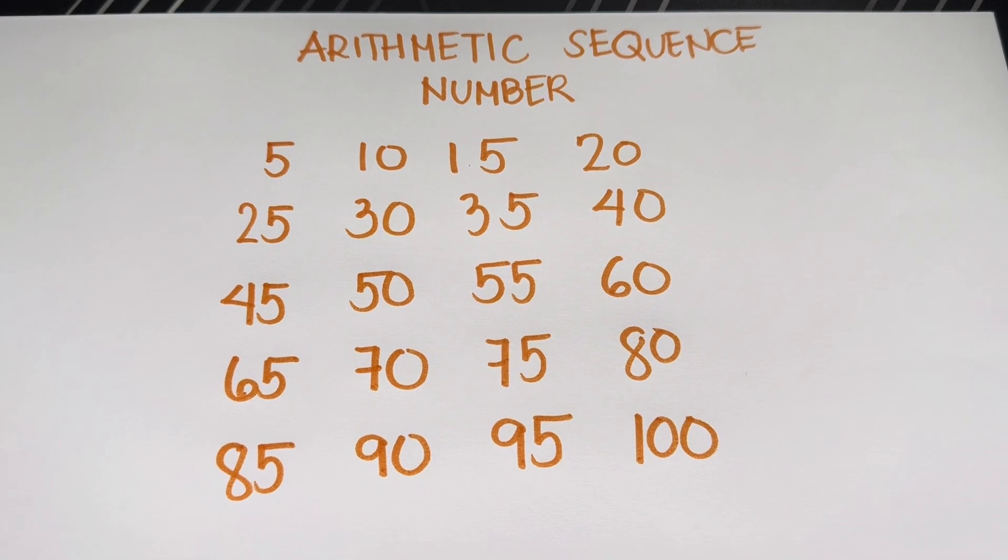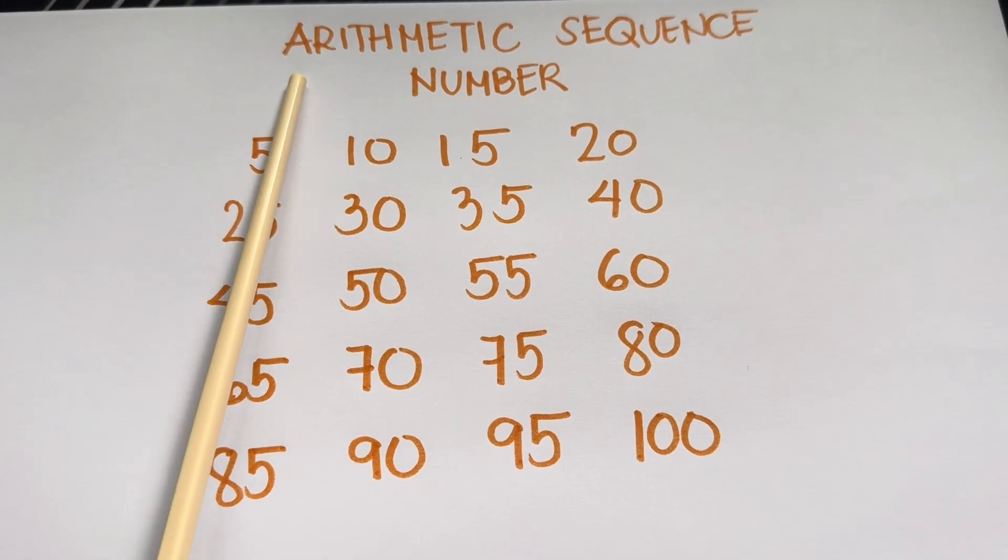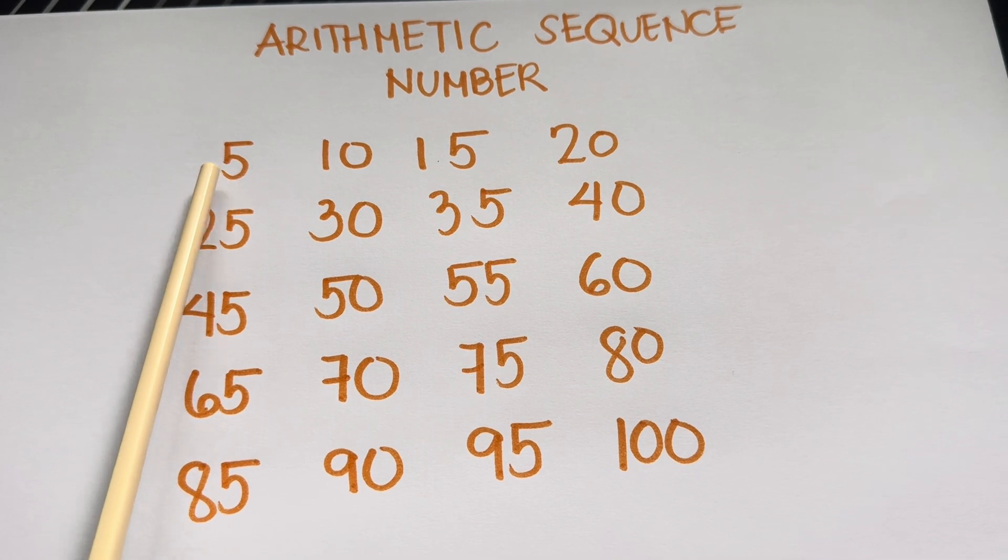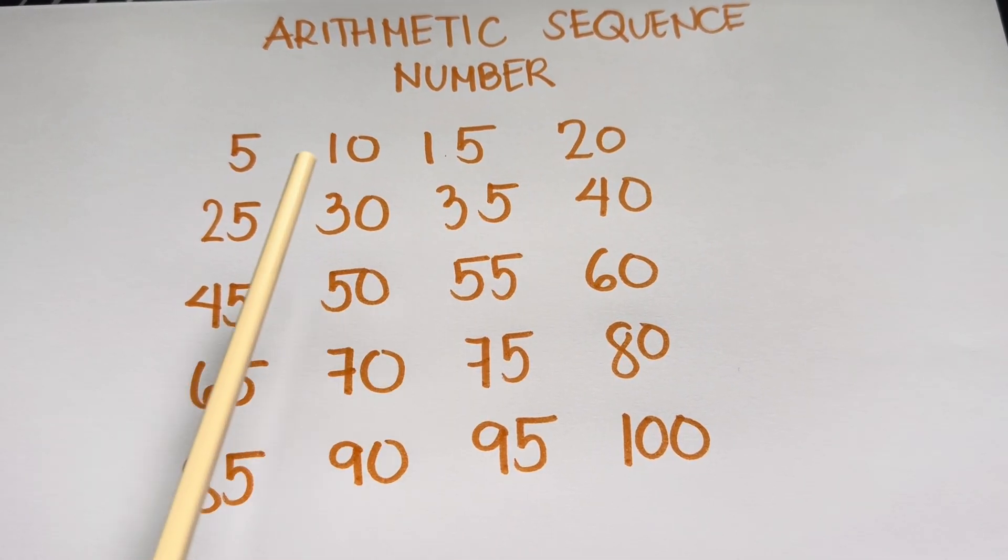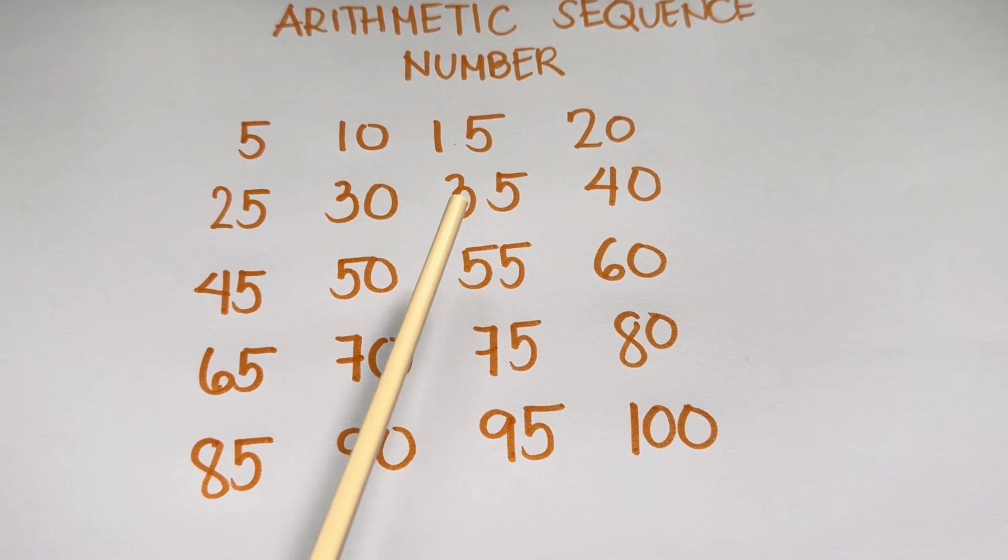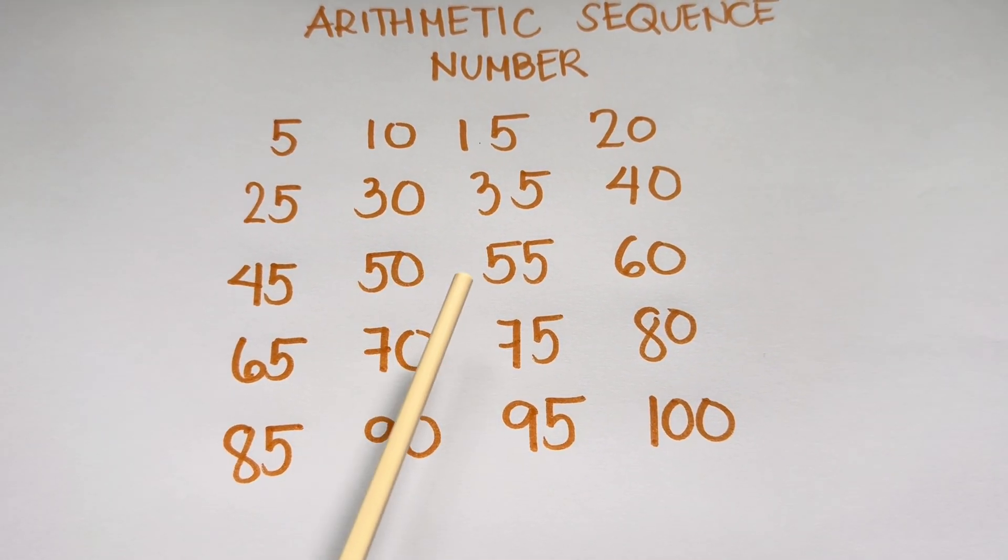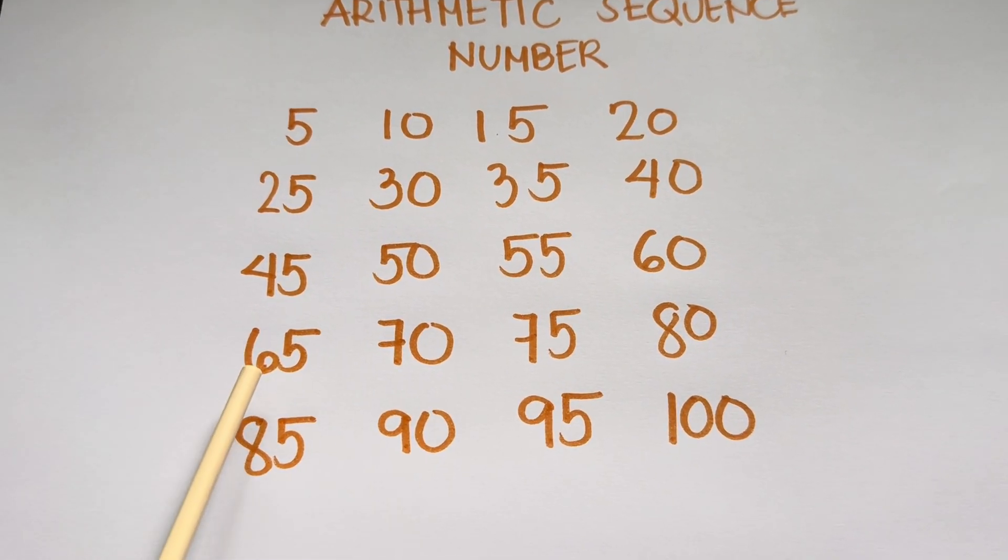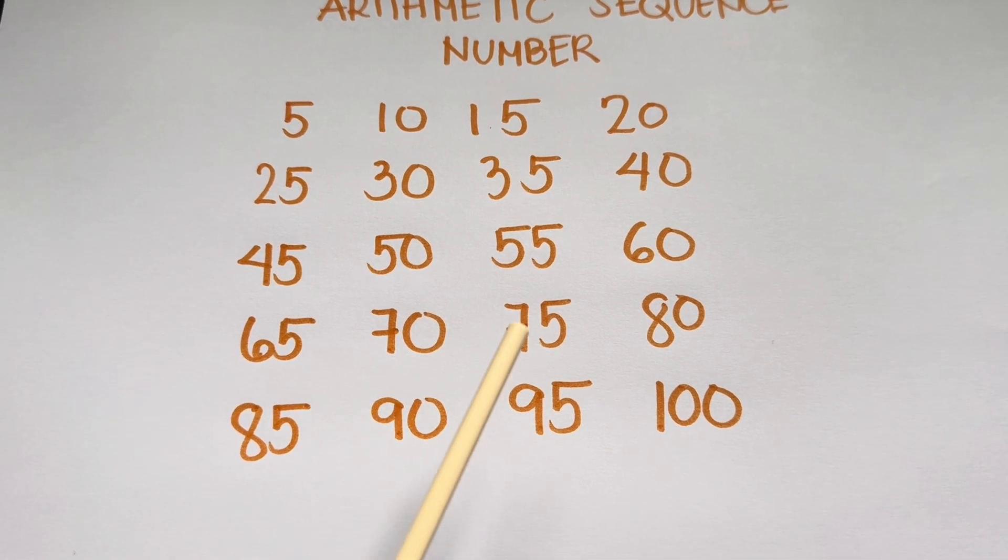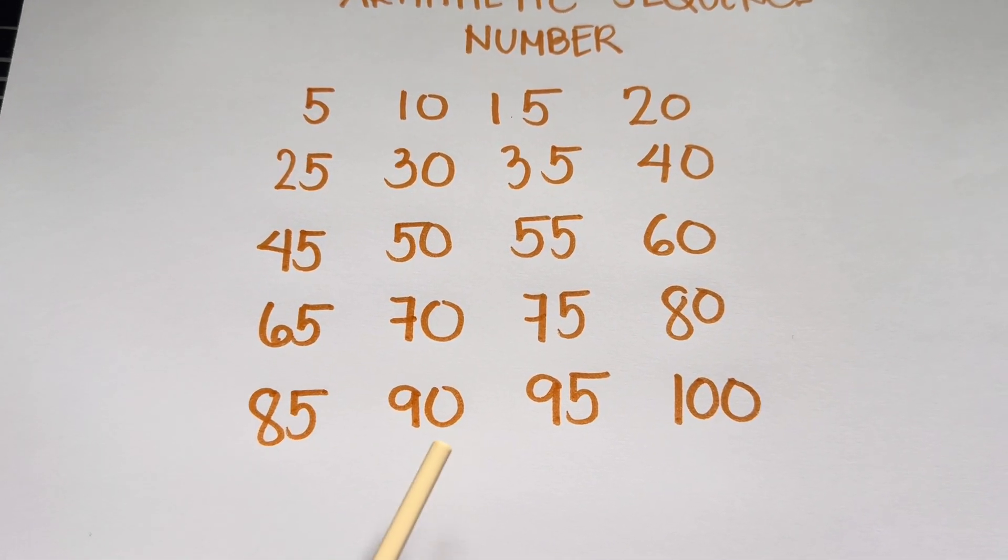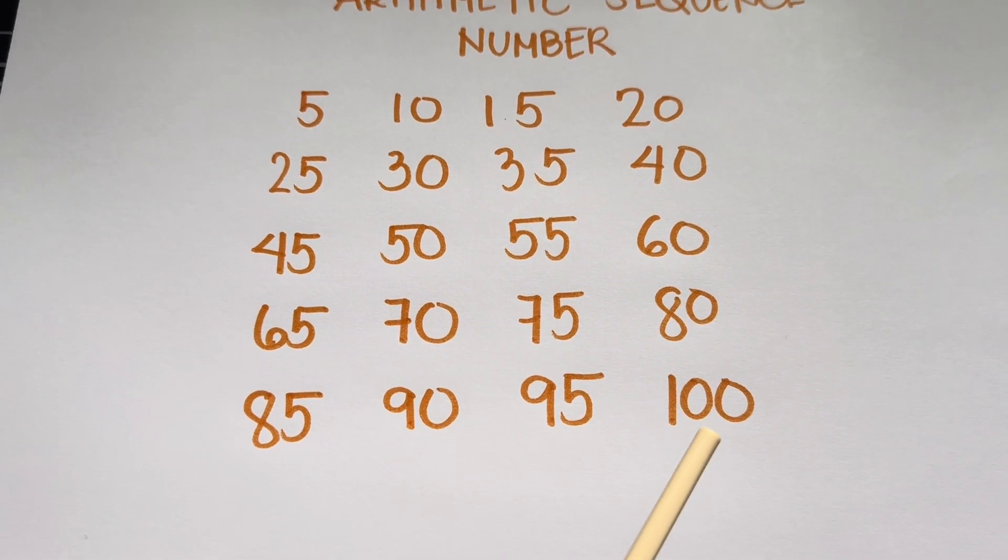Let's summarize arithmetic sequence number five: five, ten, fifteen, twenty, twenty-five, thirty, thirty-five, forty, forty-five, fifty, fifty-five, sixty, sixty-five, seventy, seventy-five, eighty, eighty-five, ninety, ninety-five, and one hundred.